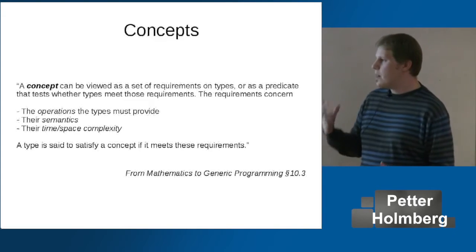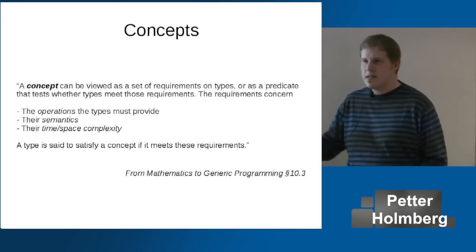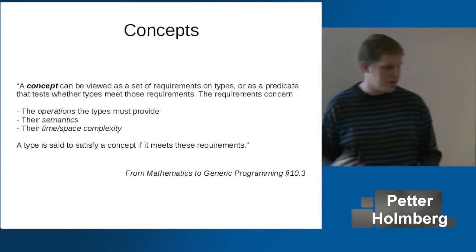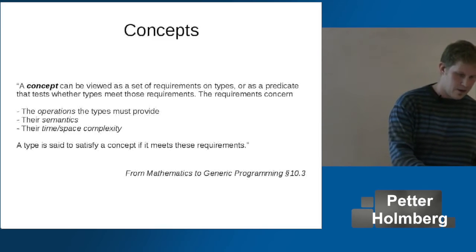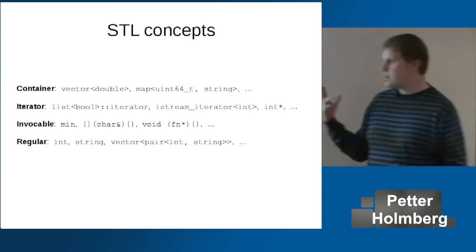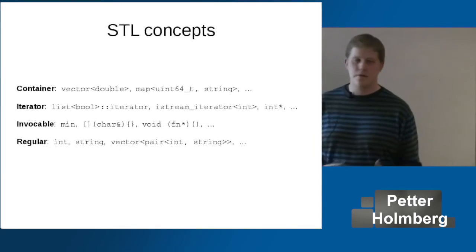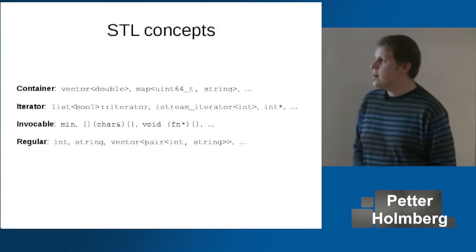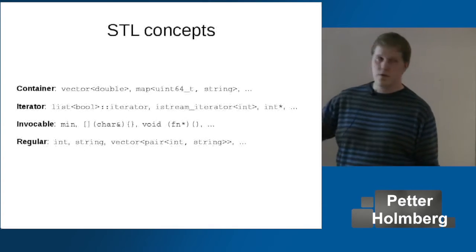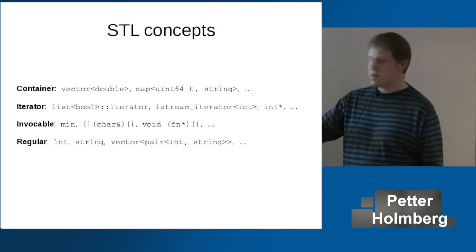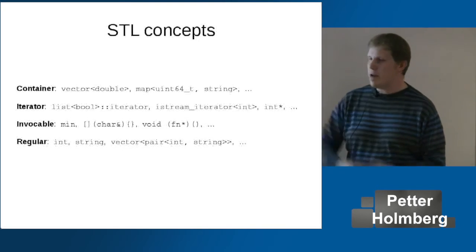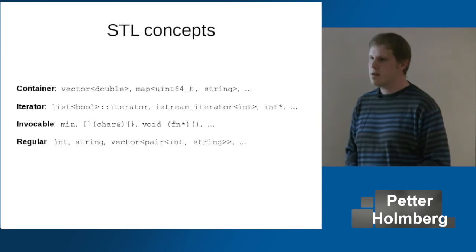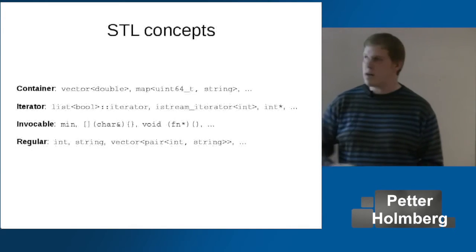You say that a type satisfies a concept — or it's a model of a concept — if it meets all of these requirements. STL got us used to thinking like that. STL is all designed around concepts. There's the concept of containers. A container is not a type, it's a concept. You can create any number of container types just by composing types together or even building a container from scratch, and they are different but essentially the same — they are collections of objects with ownership semantics.